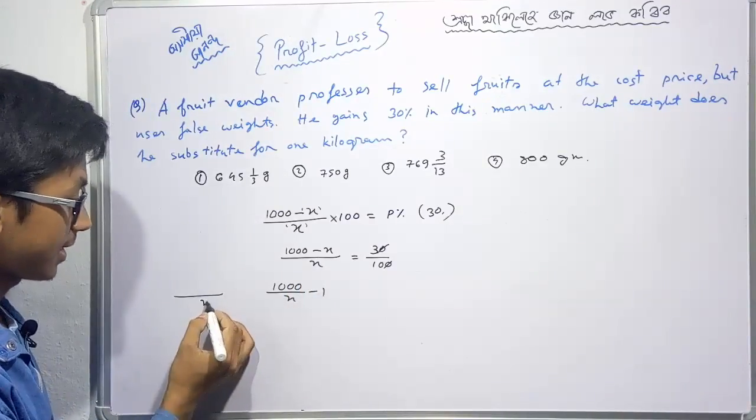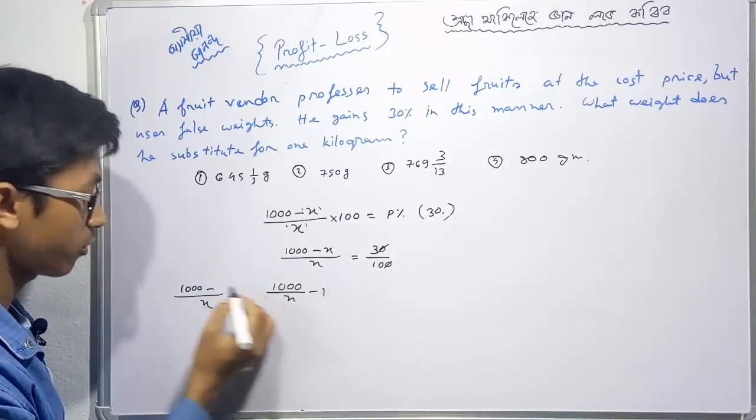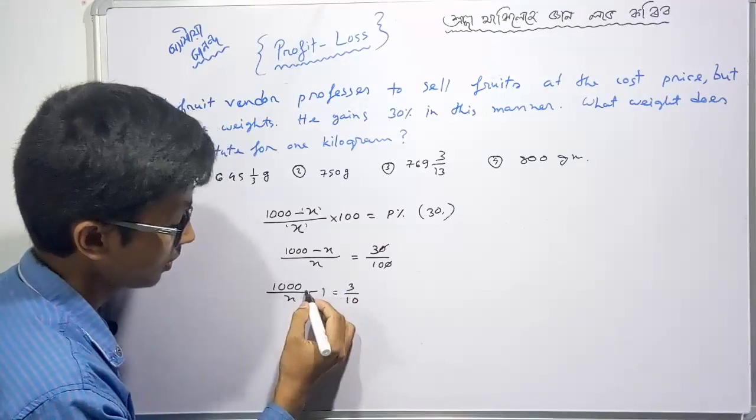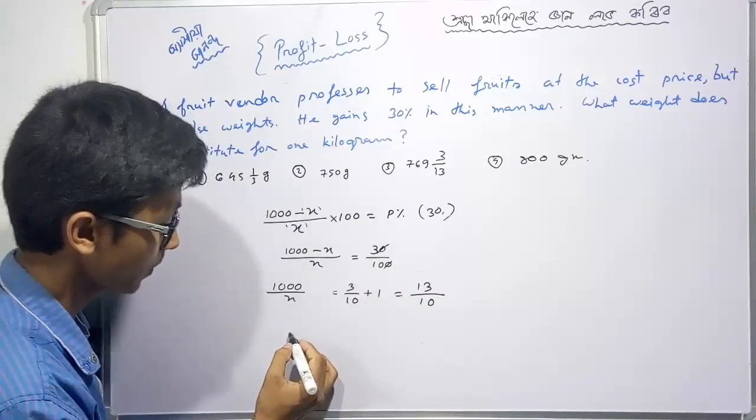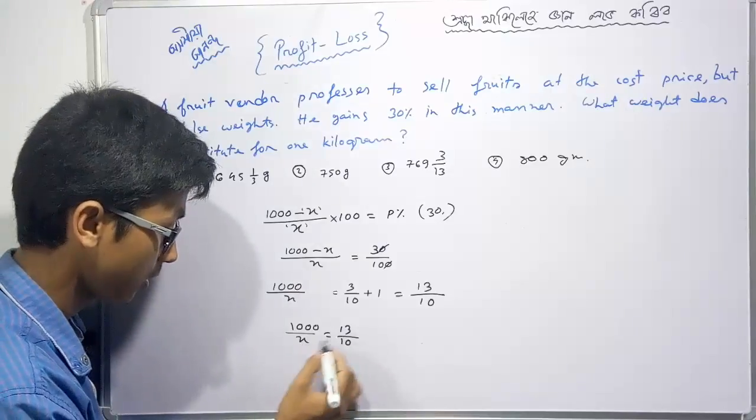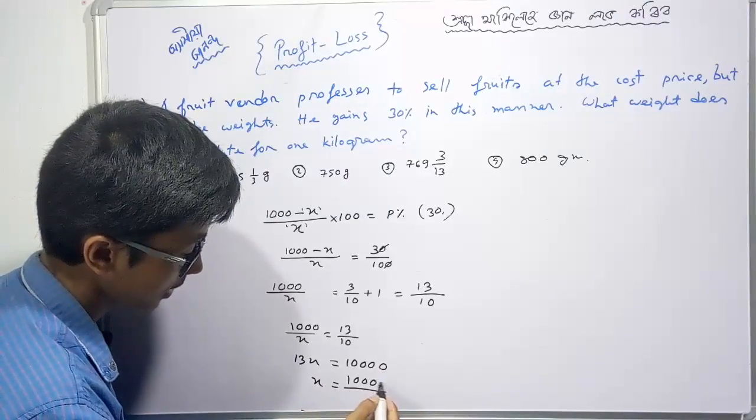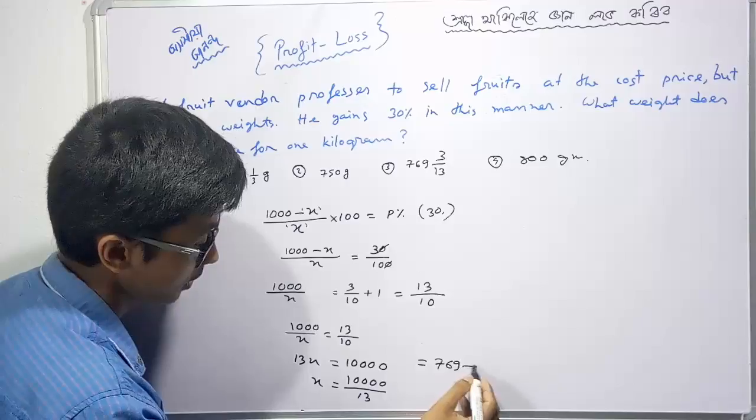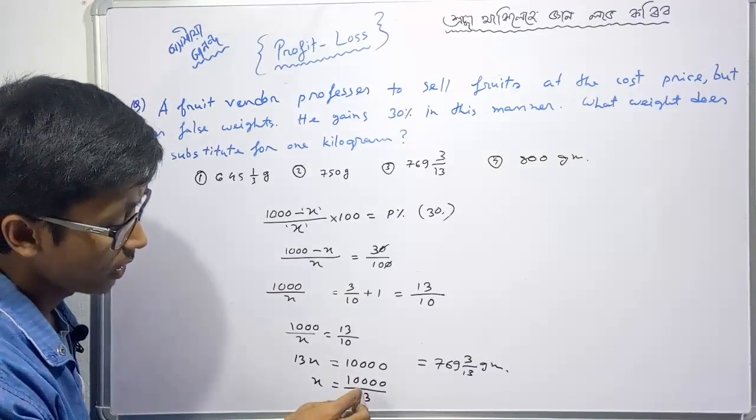Solving: X equals 1000 times 100 divided by 130. Simplifying: 1000 over 13 equals approximately 76.92. Wait, let me recalculate: 1000 times 10 divided by 13 gives us 10000/13, which equals 769.13 grams.